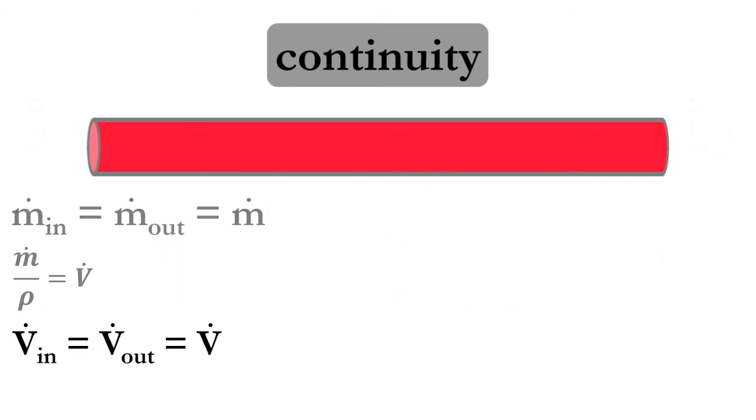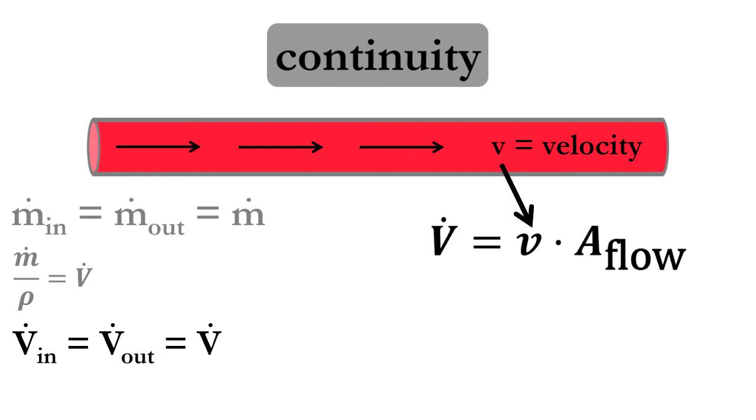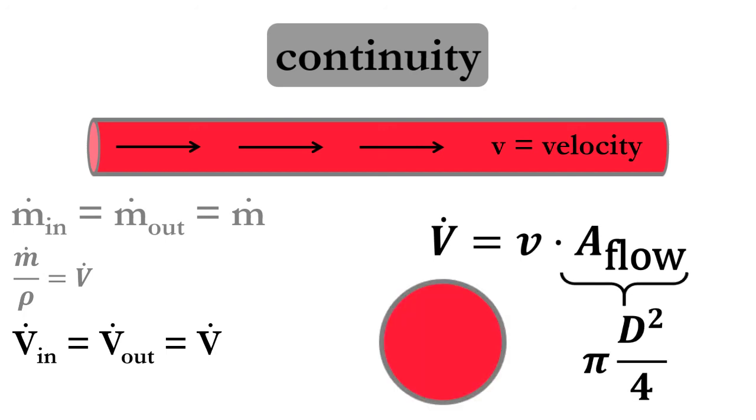Finally, we must relate volumetric flow rate to velocity. We can say that volumetric flow rate is equal to the fluid velocity multiplied by the area of flow, which for our pipe is the circular cross-sectional area calculated using the inside diameter of the pipe.